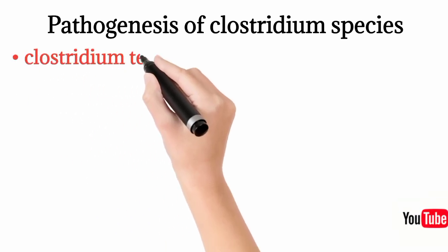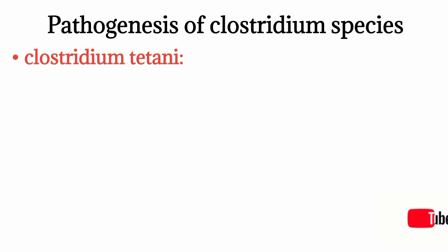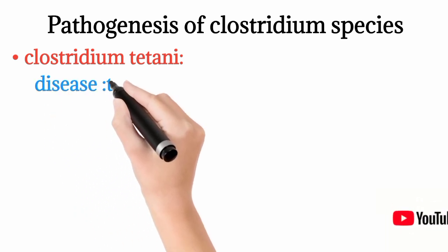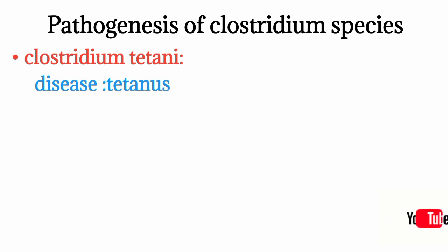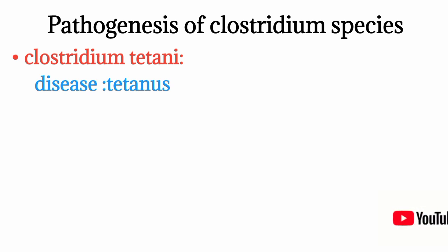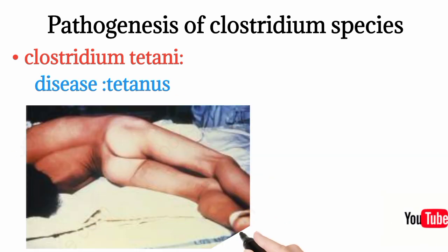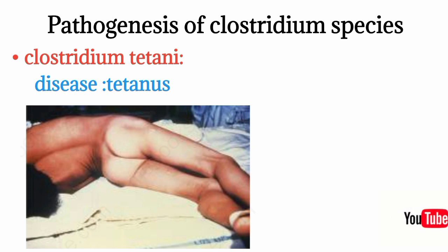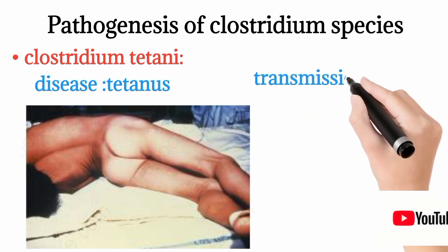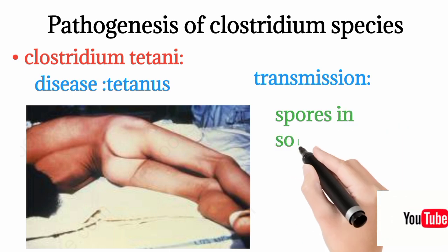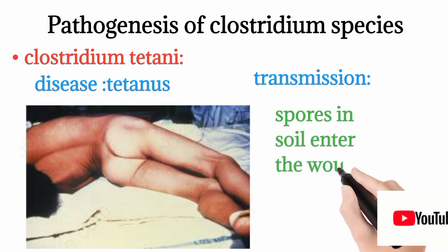Moving to Clostridium species — Clostridium tetani causes tetanus. Tetanus is a disease associated with muscle spasms and hyperextension of the back, a position also known as opisthotonus. The transmission is through spores in the soil entering wounds.